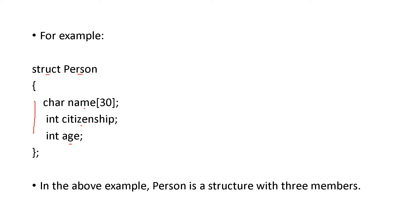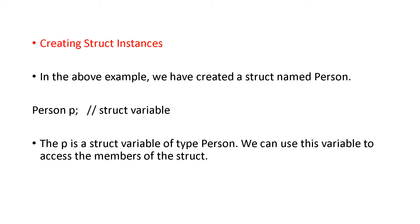You have to put a semicolon at the end of the structure definition. Now, how to create a structure instance: you have created the structure named 'person'. You write 'person P' — P is the variable with the help of which you are accessing the structure. P is a struct variable of type 'person'. We can use this variable to access the members of the structure.